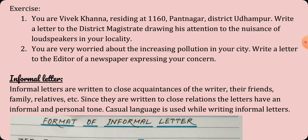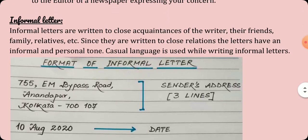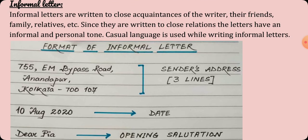Next, we are coming to informal letters. Informal letters are written to close acquaintances of the writer — their friends, family, relatives, etc. Since they are written to close relations, the letters have an informal and personal tone. Casual language is used while writing informal letters.